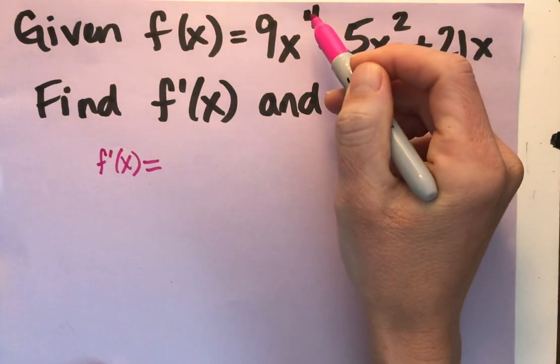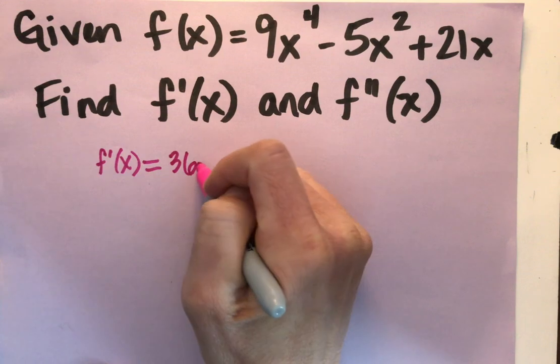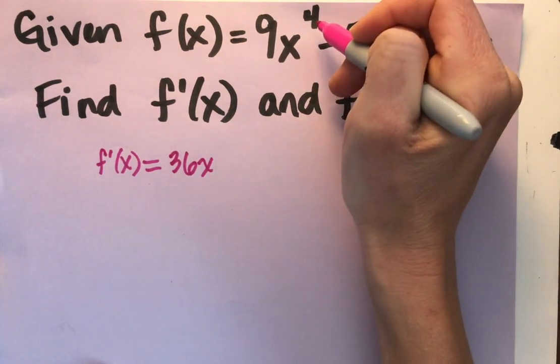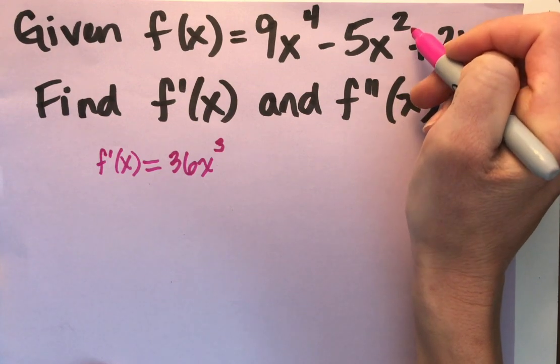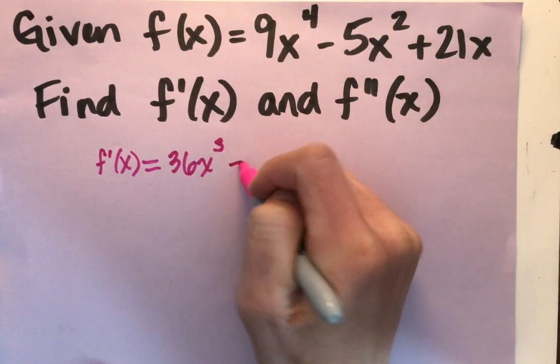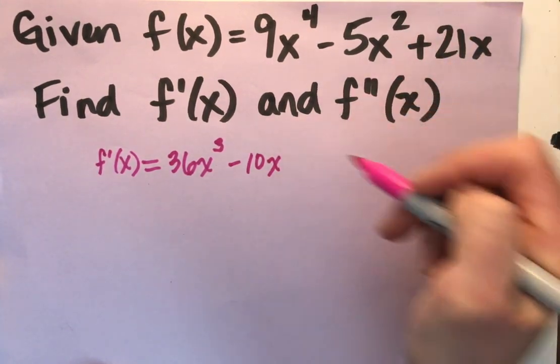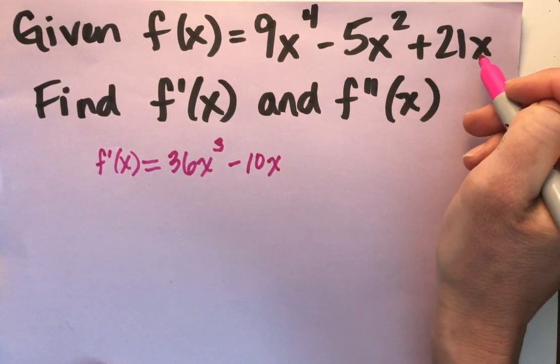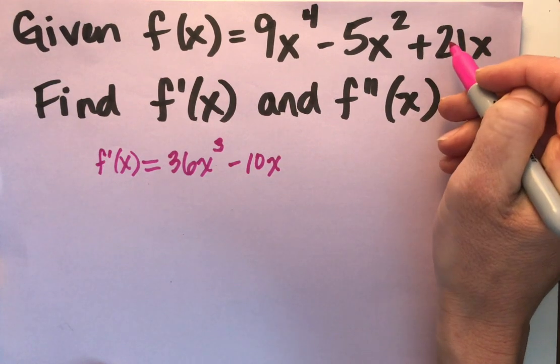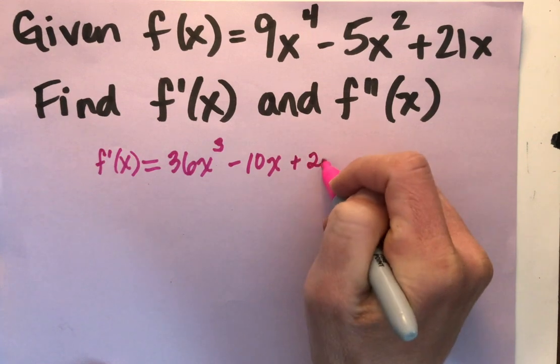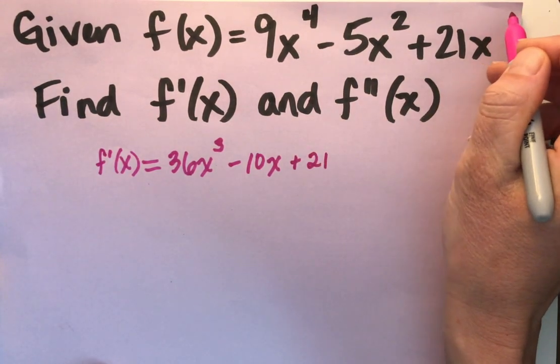So with that shortcut method, I take the 4, bring it down, times the 9, so I get 36x to the 4 minus 1 third power. I'm going to continue with the minus 5x squared, the 2 is going to come down, minus 10x, 2 minus 1 to the 1 power. And I've got a 21x, it's raised to the first power. I don't write it there, but I know it's there. That one's going to come down. So I've got plus 21x to the 1 minus 1, so it's x to the zero power.